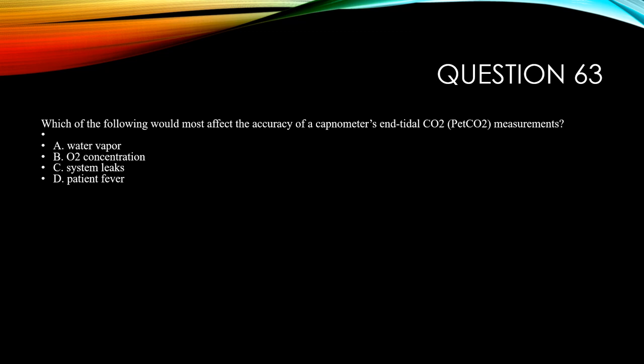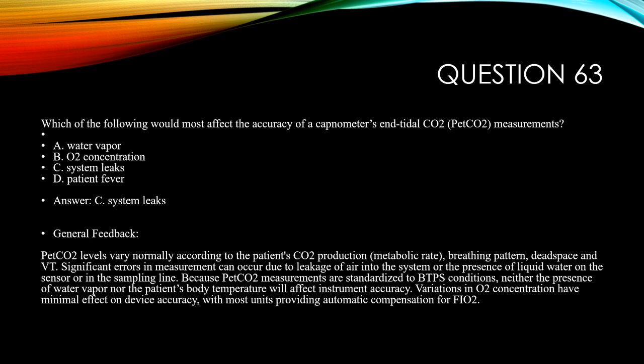Question 63. Which of the following would most likely affect the accuracy of a capnographer end-tidal CO2 measurement? A, water vapor. B, O2 concentration. C, system leaks. Or D, patient fever. The answer is C, system leaks. End-tidal CO2 levels vary normally according to the patient's CO2 production, metabolic rate, breathing pattern and rate, dead space, and minute ventilation. Significant errors in measurement can occur due to leakage of air into the system. Because end-tidal CO2 measurements are standardized to body temperature pressure saturated conditions, neither water vapor nor body temperature affects instrument accuracy, and O2 concentration variations have minimal effect, with most units providing automatic FiO2 compensation.